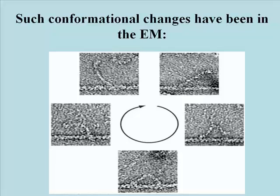Just to look at that head, it has at least five different conformations. It sits at five different angles, relatively speaking, to the myosin thick filament, which is shown horizontally at the bottom of each unit.